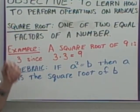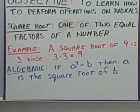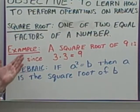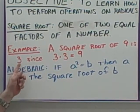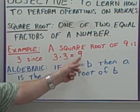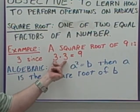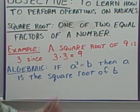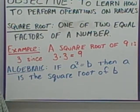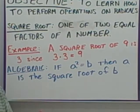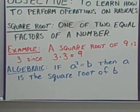Square root. A square root is one of two equal factors of a number. For example, a square root of 9 is 3, since 3 times 3 is 9. Multiplying together, you get 9. So basically, you're asking yourself: what number times itself is going to give me this? And that will help you find the square root.